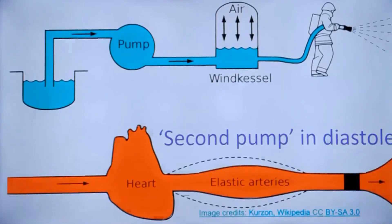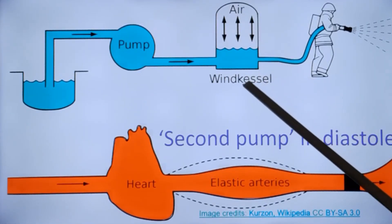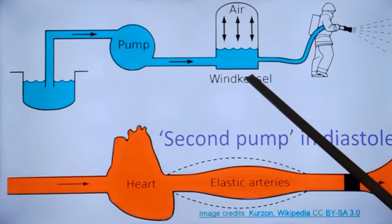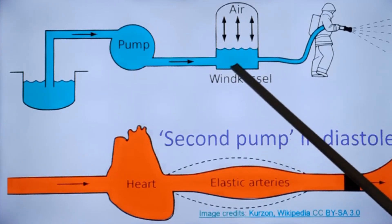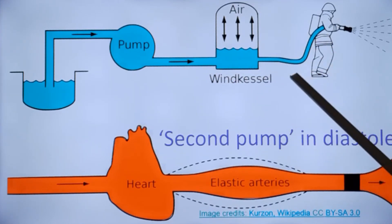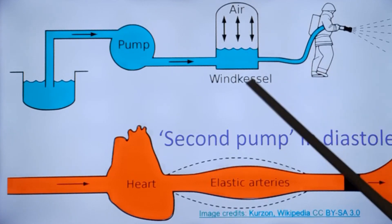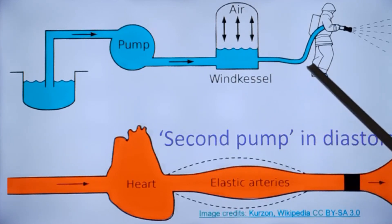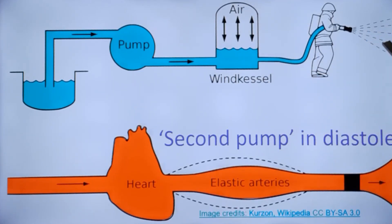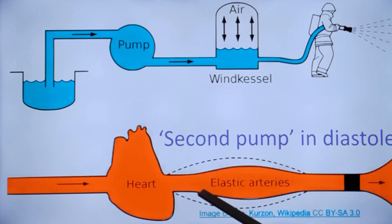Here is an illustration of the Windkessel used in the 18th century by firefighters. The additional pressure build-up in the air chamber ensures continuous delivery of water for firefighting. A similar thing occurs in elastic arteries like the aorta.